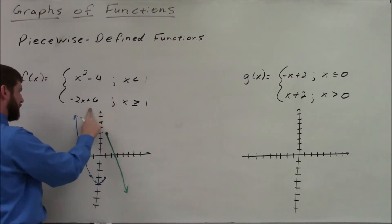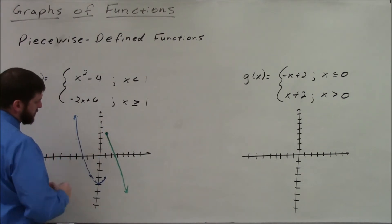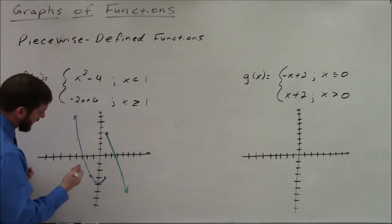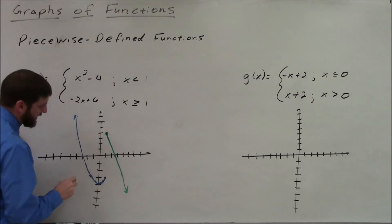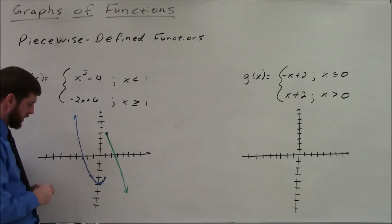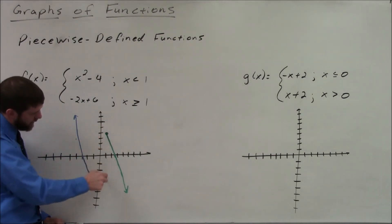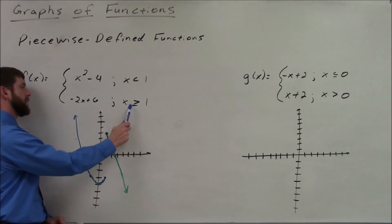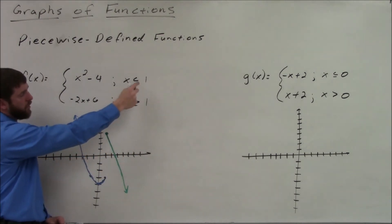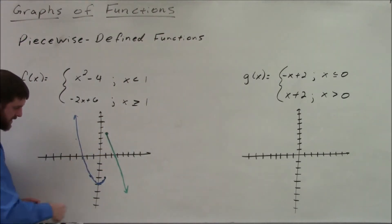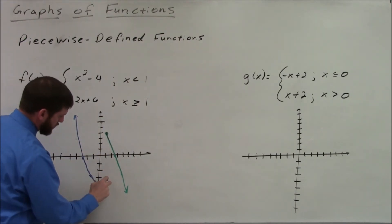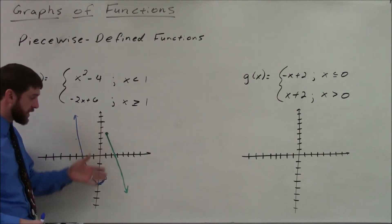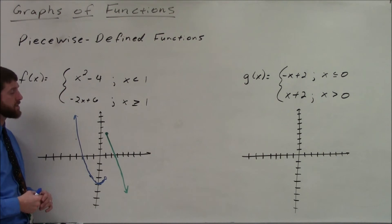As drawn, we currently have two y values at x = 1, so it's not a function yet. The first equation does not apply at x = 1 — it's the second equation that applies there. So at x = 1, we draw an open circle on the parabola piece to show we're not including that point on that portion of the curve. This gives us the graph of a piecewise defined function.